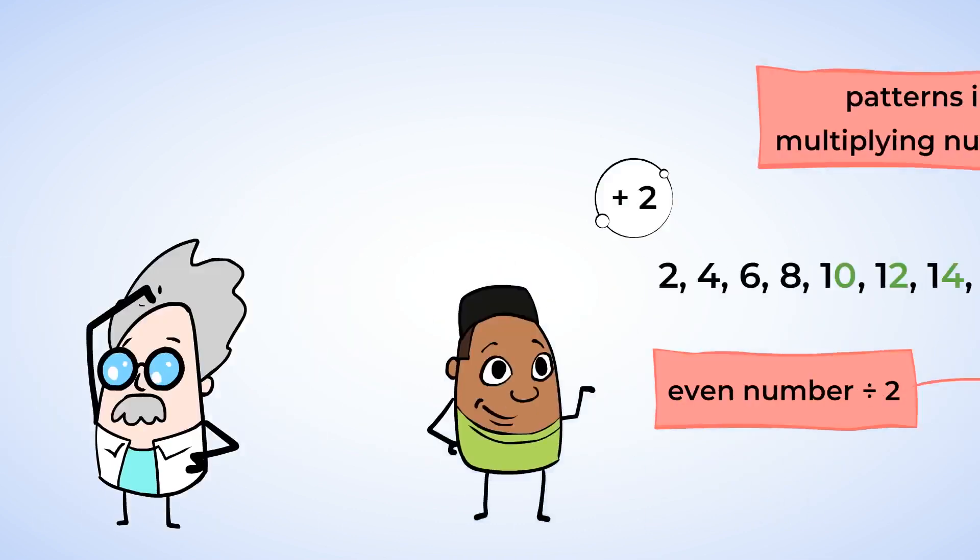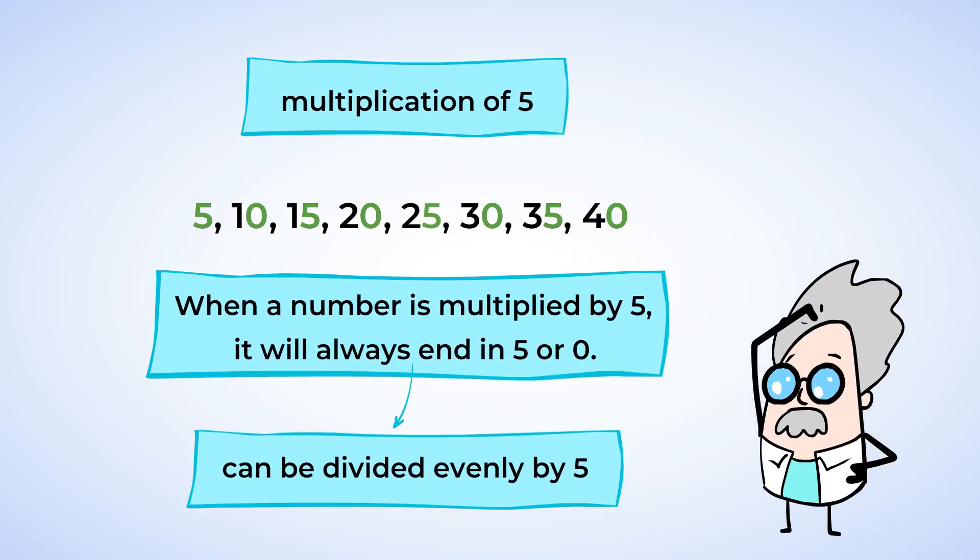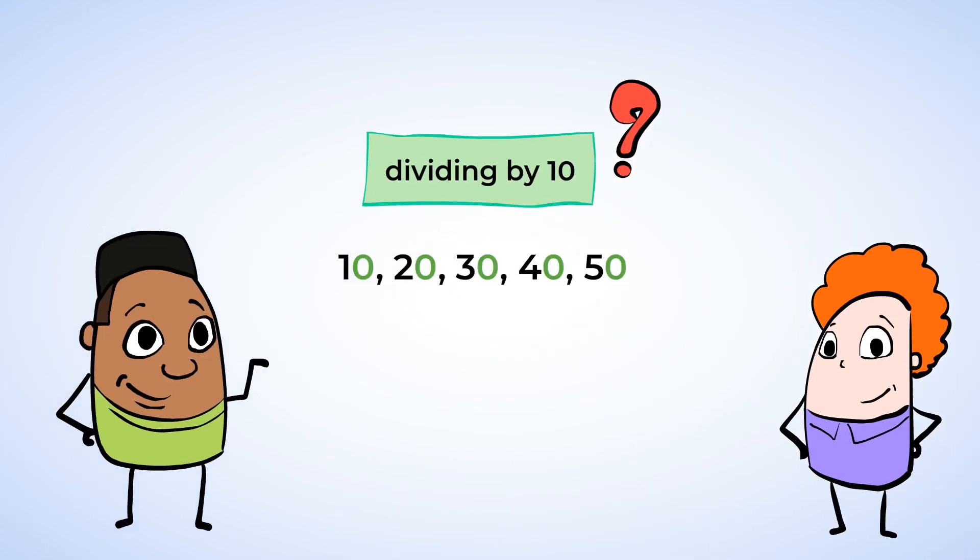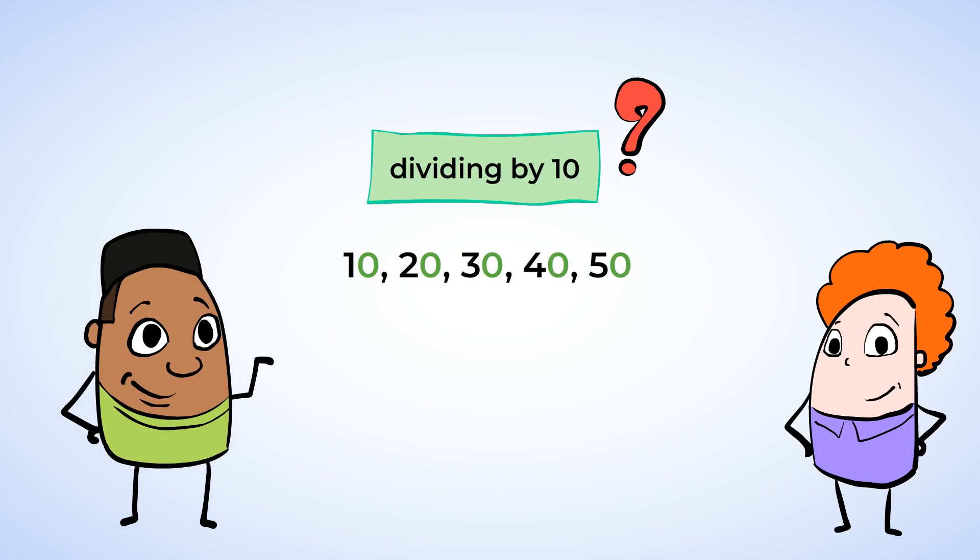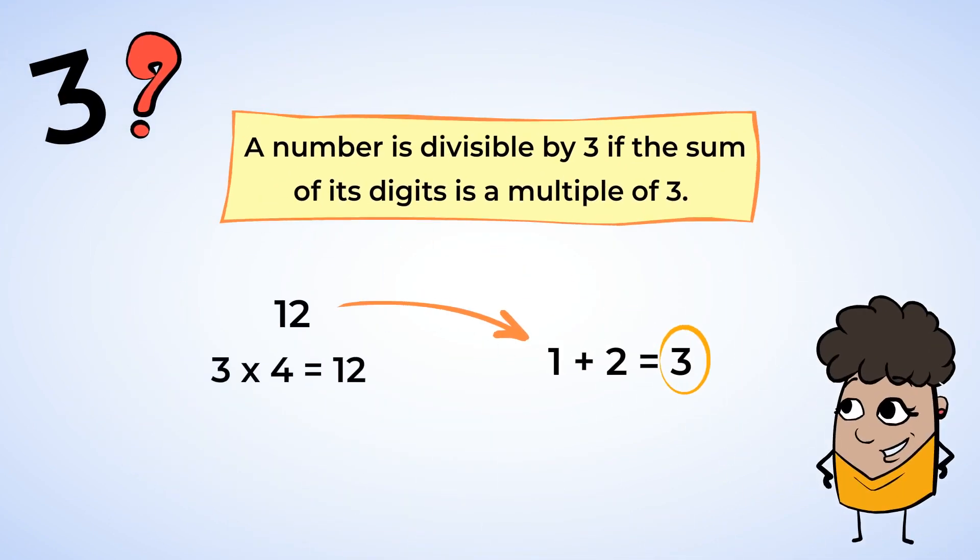Now let's review. If the number ends in an even number, it is divisible by 2. If it ends in 5 or 0, it's divisible by 5. When the number ends in 0, it's also divisible by 10. To determine if the number is divisible by 3, add the digits together to see if it's a multiple of 3.